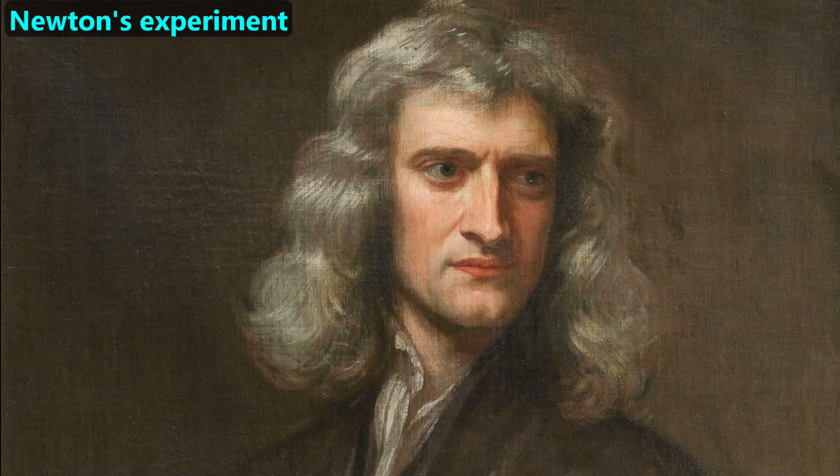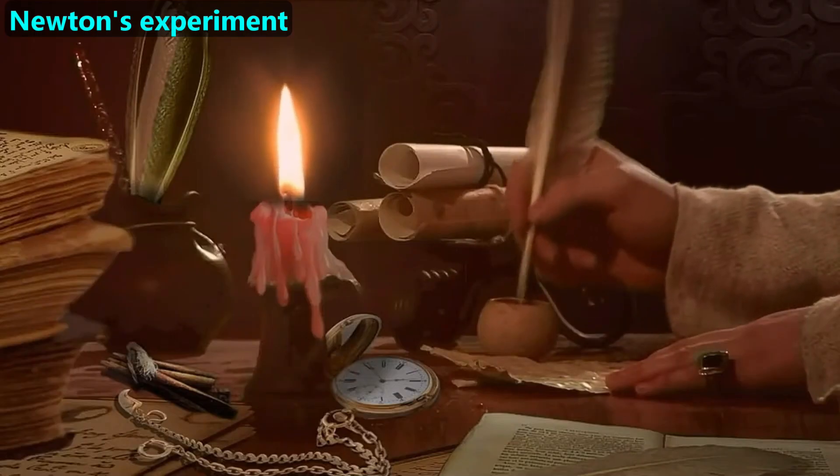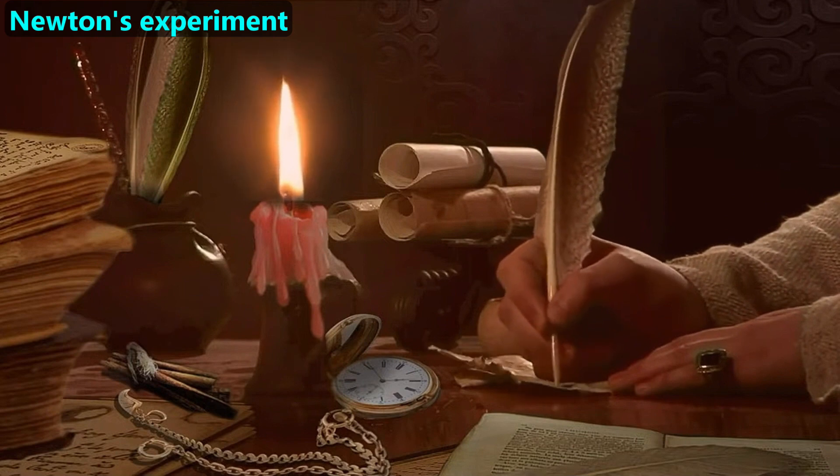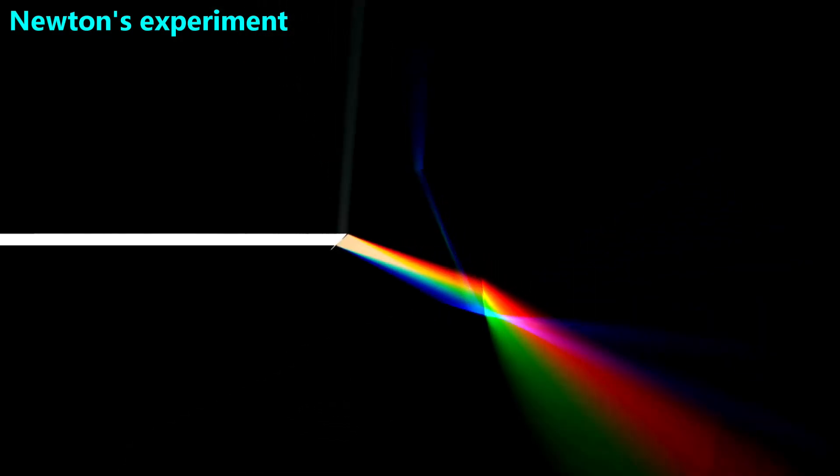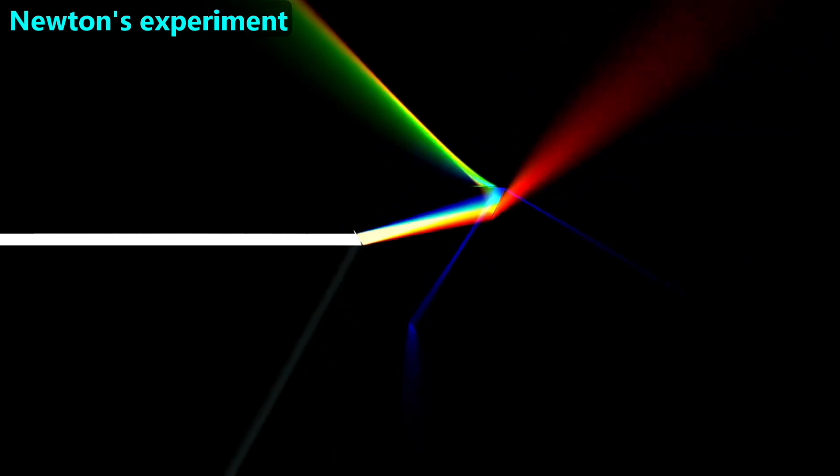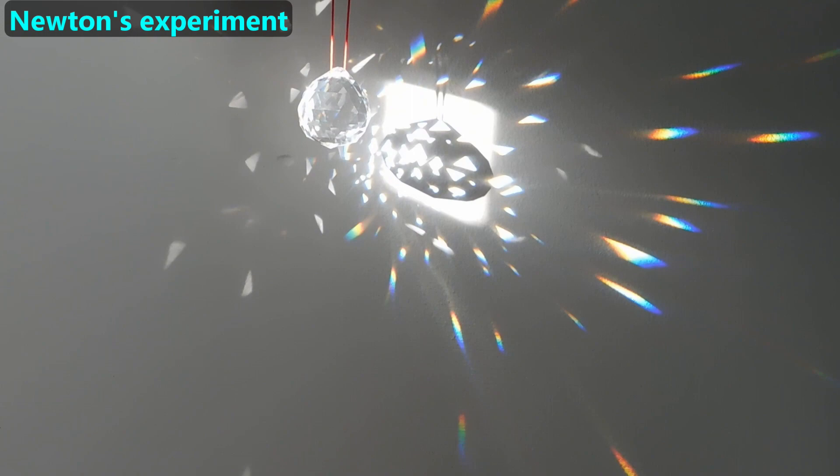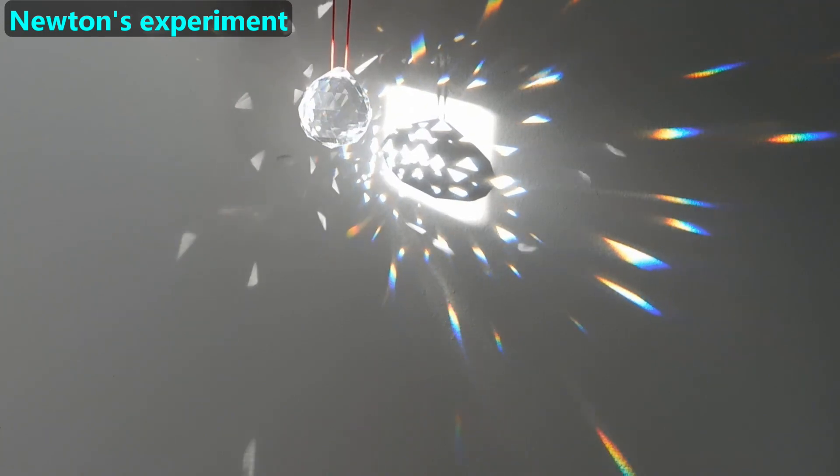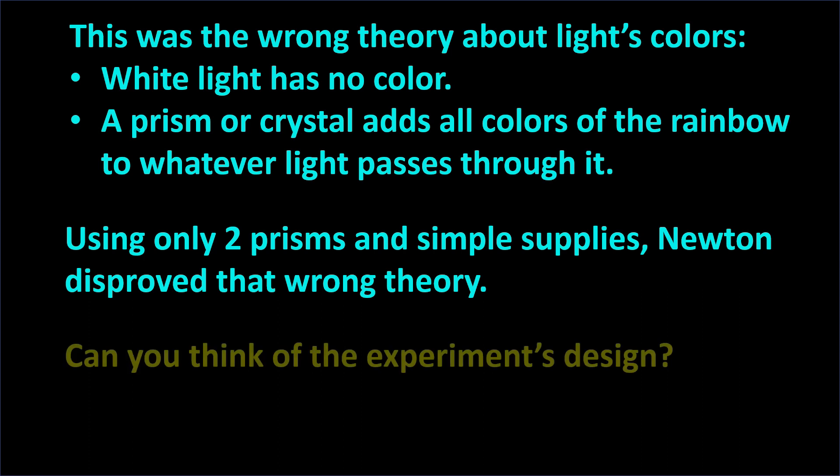Next, we'll introduce one of Isaac Newton's most famous experiments on light. When Newton was studying nature about 400 years ago, many people believed that white light was like a blank piece of white paper. They thought that prisms and crystals could add all the colors of the rainbow to the light as a beam passed through them. Newton thought this theory was wrong and he wanted to disprove it, using only two prisms and simple supplies. Newton disproved that theory. Can you think of the experiment's design?